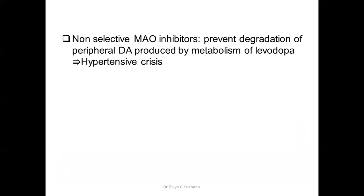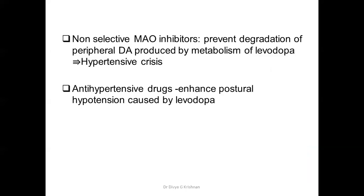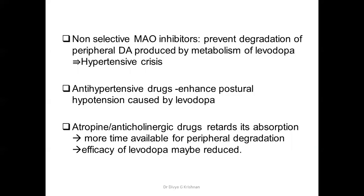Non-selective MAO inhibitors prevent the degradation of dopamine produced from levodopa, which can lead to a hypertensive crisis. Antihypertensive drugs given with levodopa can enhance the postural hypotension caused by levodopa. Atropine and other anticholinergic drugs retard absorption of levodopa from the gut, increasing time for peripheral degradation and reducing levodopa's efficacy. With that, we finish today's class — revise this part, write notes, and contact me personally if you have any doubts.